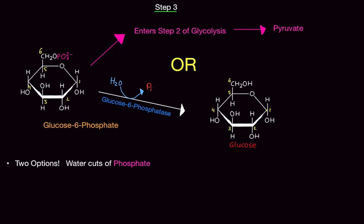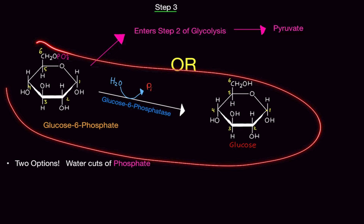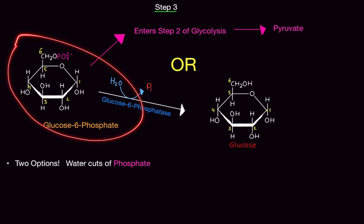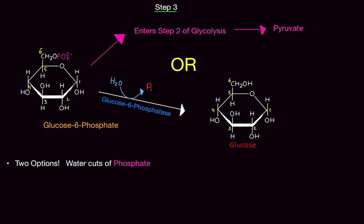The last step is actually broken into two options depending on the concentration of molecules. Glucose-6-phosphate can either enter step two of glycolysis and make pyruvate, or it can use glucose-6-phosphatase with water to shred off the phosphate on carbon six and produce normal glucose. This is actually pretty cool — because in step one of glycolysis you normally go from glucose to glucose-6-phosphate, but we're already there, so we can skip straight to step two of glycolysis and make pyruvate.